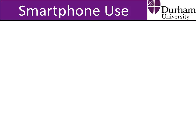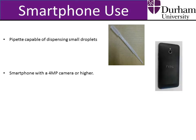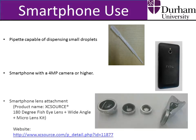To implement this method, you will need a pipette capable of dispensing small droplets. The small droplet size is necessary to minimise the droplet distortion under gravity, which will affect the contact angle measurement. You will also need a smartphone with a 4 megapixel camera or higher to ensure sufficient image resolution. And finally you will need the smartphone lens attachment, where the product name and company website are listed here.